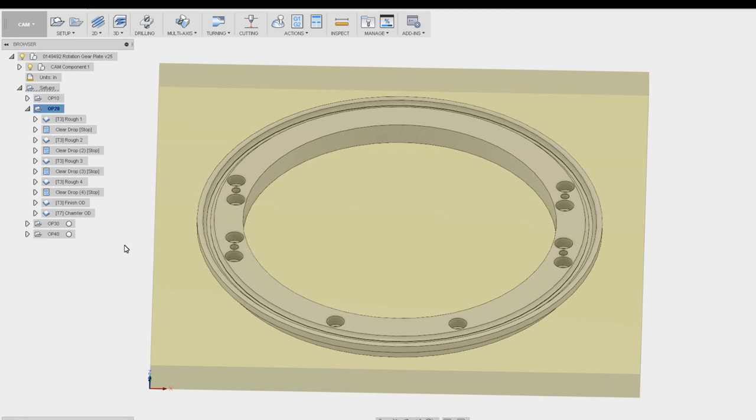In the second OP, what we do is we put some T-nuts in the table ahead of time underneath the part in the center. Once this center area is cleared out, we'll install two toe clamps here and then one here. After these are installed and torqued down, we will remove these four clamps. That way the part never moves, and you never have to worry about shifting offsets.